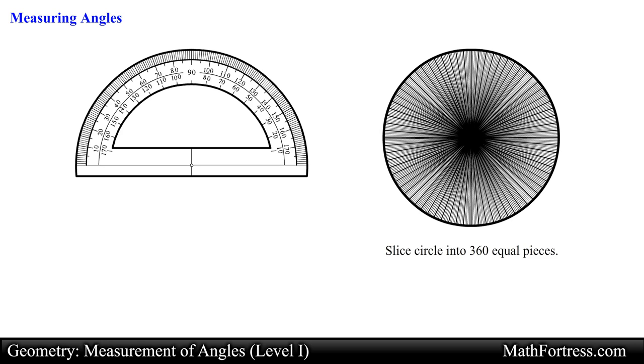By doing this we end up with 360 individual angles and each angle or slice would measure one degree. So a degree is equivalent to 1/360th of a complete revolution around the circle.